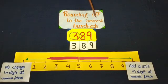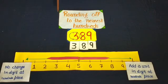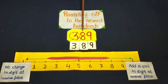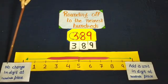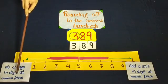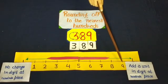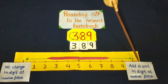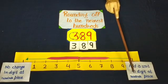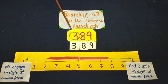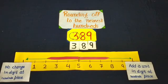Now we do rounding to the nearest hundreds with a new number — it is 389. If we want to round to the nearest hundreds, look at the digit at the tens place. If the digit at tens place is 4, 3, 2, or 1, no change in the digit at hundreds place. If the digit is 5, 6, 7, 8, or 9 at tens place, add a unit to the digit at hundreds place. Here the number is 389, and the digit at tens place is 8.